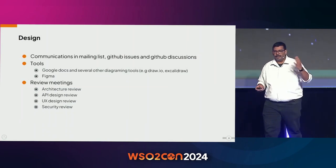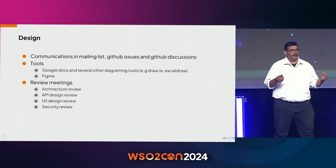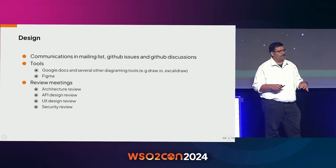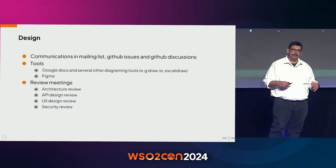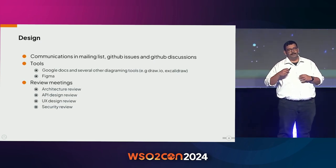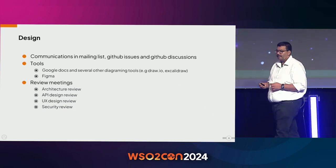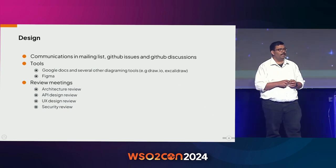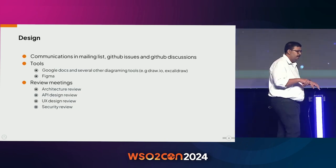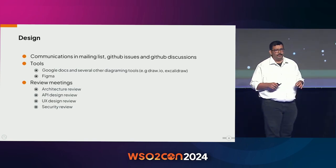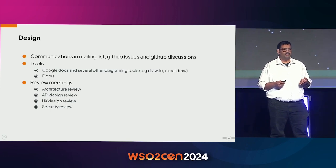Then we prioritize. We have something called a product council. Multiple people get together, go through what feature requests are available, and then prioritize. Once the feature got prioritized, we start with the design phase. Inside WSO2, we use open source culture — we came from an open source background and all our products are open source.